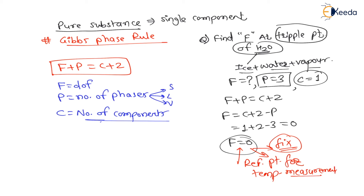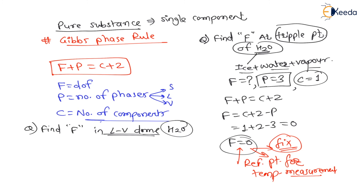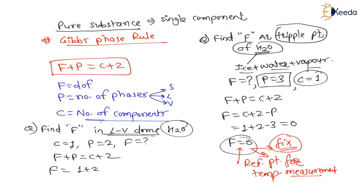Question 2: Find the degree of freedom in the liquid-vapor dome for water. In the liquid-vapor dome, water exists in two phases: liquid (water) and vapor (steam). Since water is a pure substance, C = 1. Applying Gibbs phase rule: F = C + 2 − P = 1 + 2 − 2 = 1. Therefore, in the two-phase (two-state) region for water, the degree of freedom is 1.